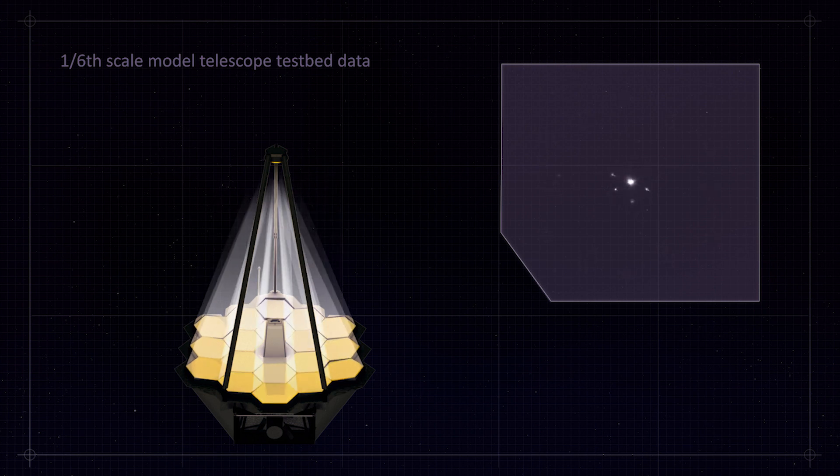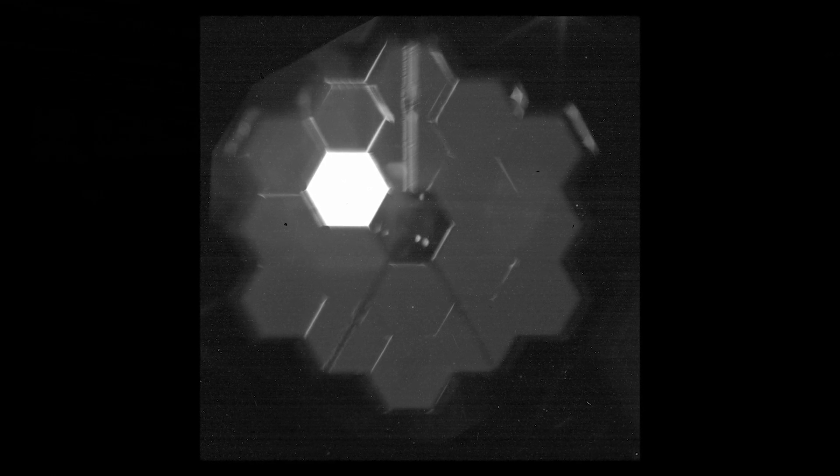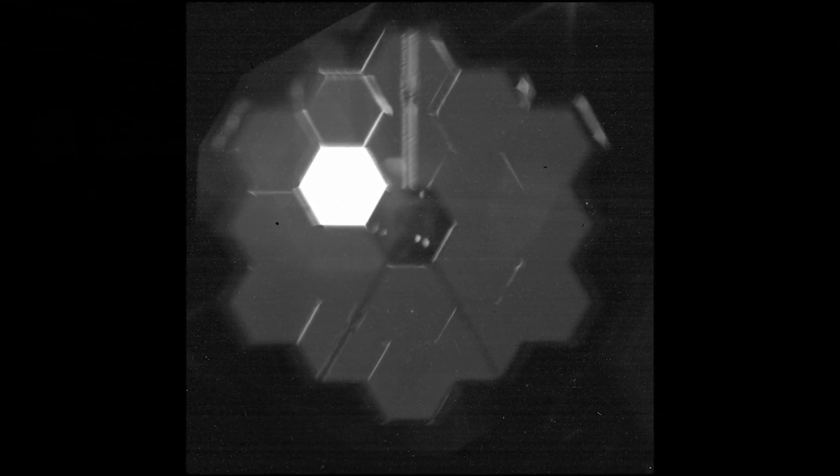We also took a selfie of the primary mirror. We took an image of the primary mirror, and that helps us understand the alignment of the telescope, especially the primary mirror to the camera itself and the instruments. There's actually a special lens in the near-infrared camera that you can put in, and it allows you to take a picture of the primary mirror itself.